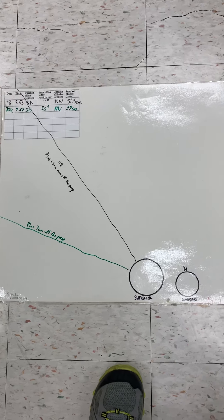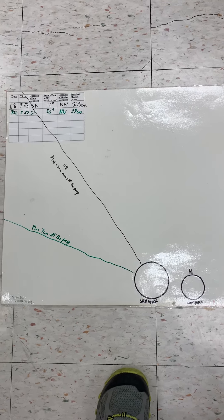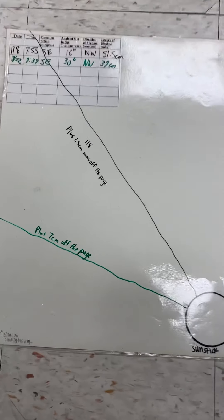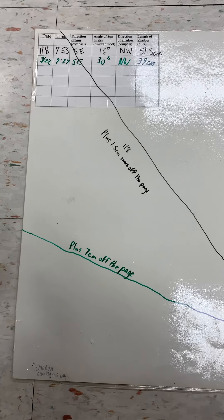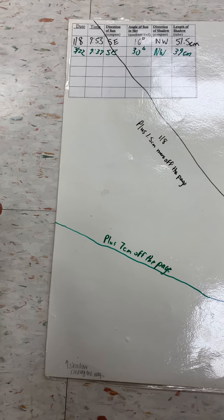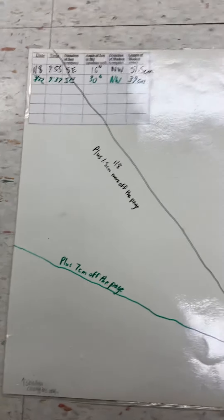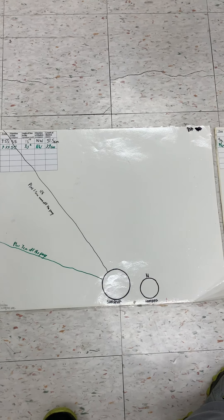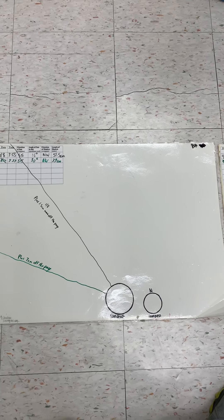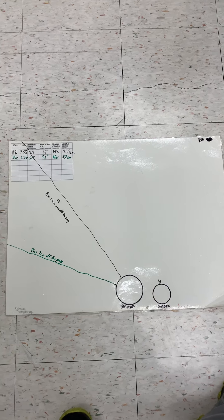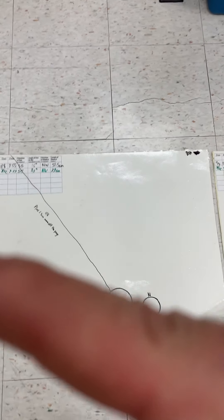This is first period, and you can compare to see how you actually predicted it. First period had a length of 39 centimeters, and if you look down here, this one actually went off the page seven extra centimeters — so it probably goes out about seven centimeters off the page. You can see that it is the longest shadow of any period, and it's way over to the left.